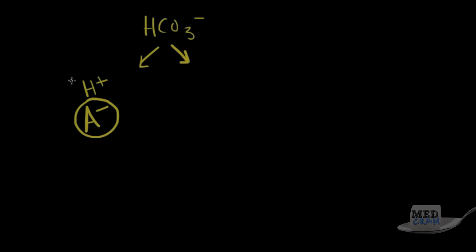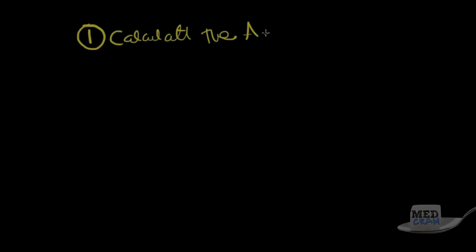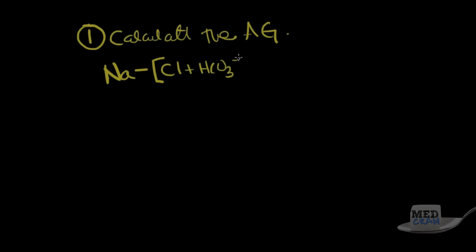The first rule whenever you do an acid-base problem — you can take this to the bank — is to calculate the anion gap. The anion gap is always sodium minus the sum of chloride plus bicarbonate. Once you've calculated it, you need to determine if it's elevated.